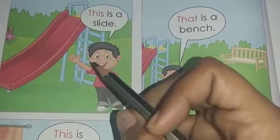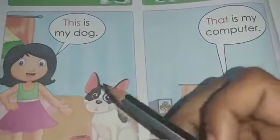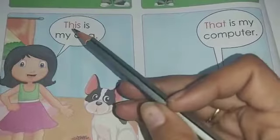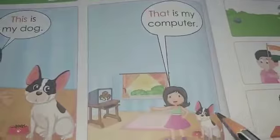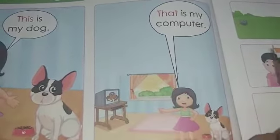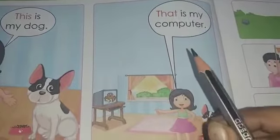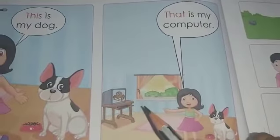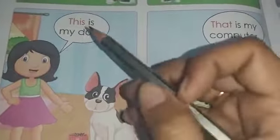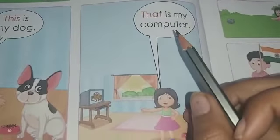Next example: this girl is with her dog, so she says 'This is my dog' because the dog is right next to her. In the next picture, she is with the dog but there is also a computer far away, so she says 'That is my computer'. The dog is nearer, so 'This is my dog', and the computer is far off, so 'That is my computer'.